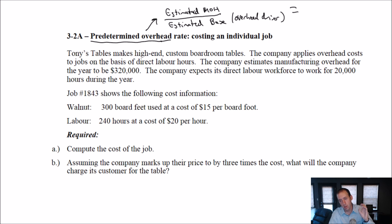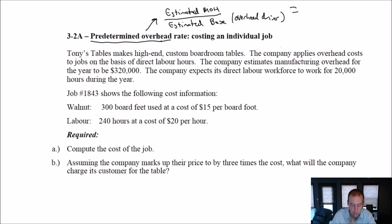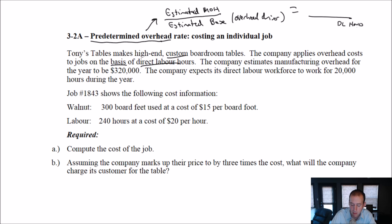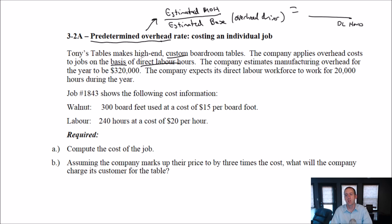Let's examine this example, which I think will really illustrate the point. Tony's Tables makes high-end custom boardroom tables — custom, so this is obviously a job order costing type of firm. The company applies overhead costs to jobs on the basis of direct labor hours. So I know when calculating this for Tony's Tables, my denominator is going to be direct labor hours. You'll read that sentence in problems all the time: 'X company applies overhead on the basis of [something].' Be on the lookout for that sentence — it's a really key sentence.